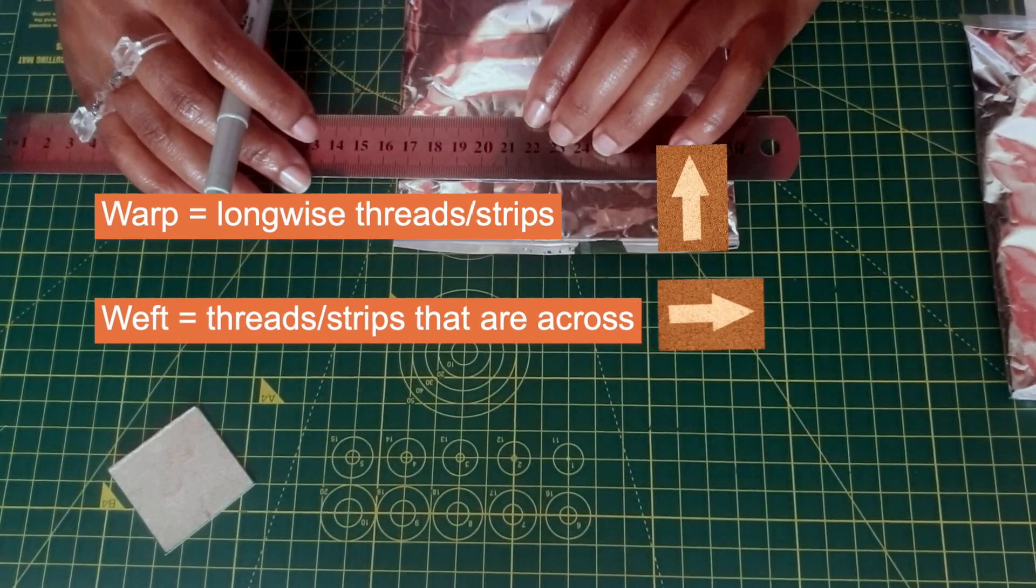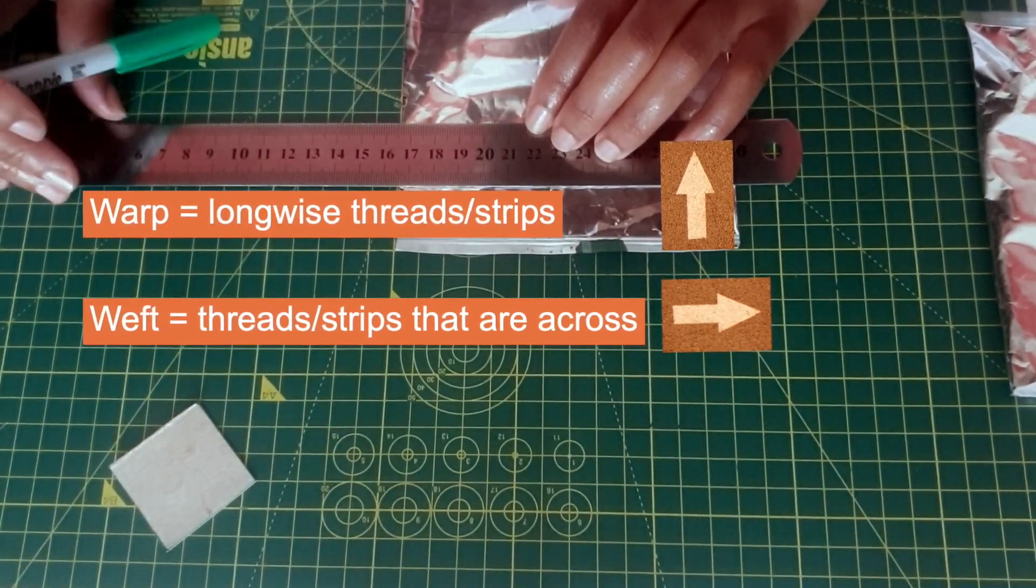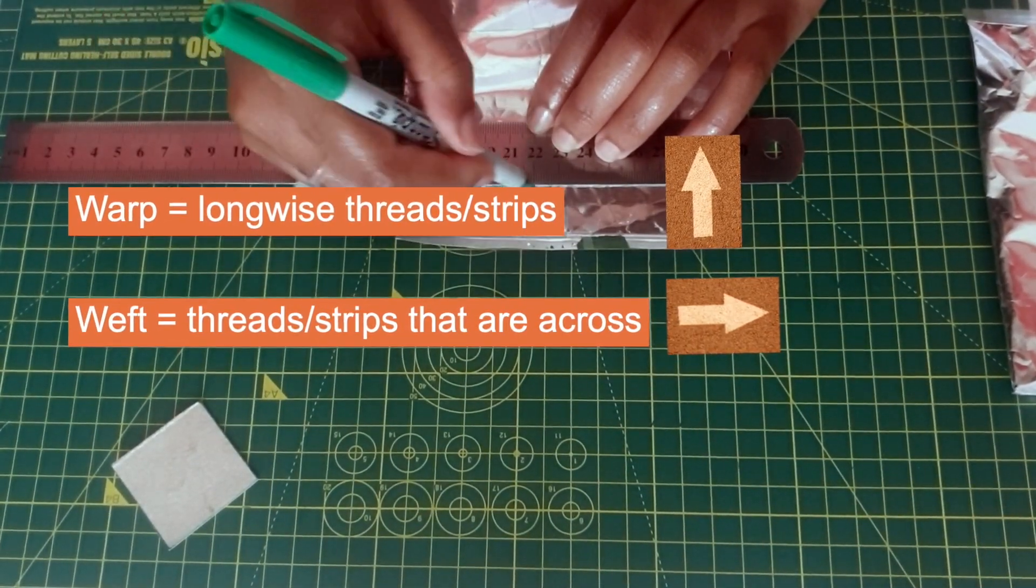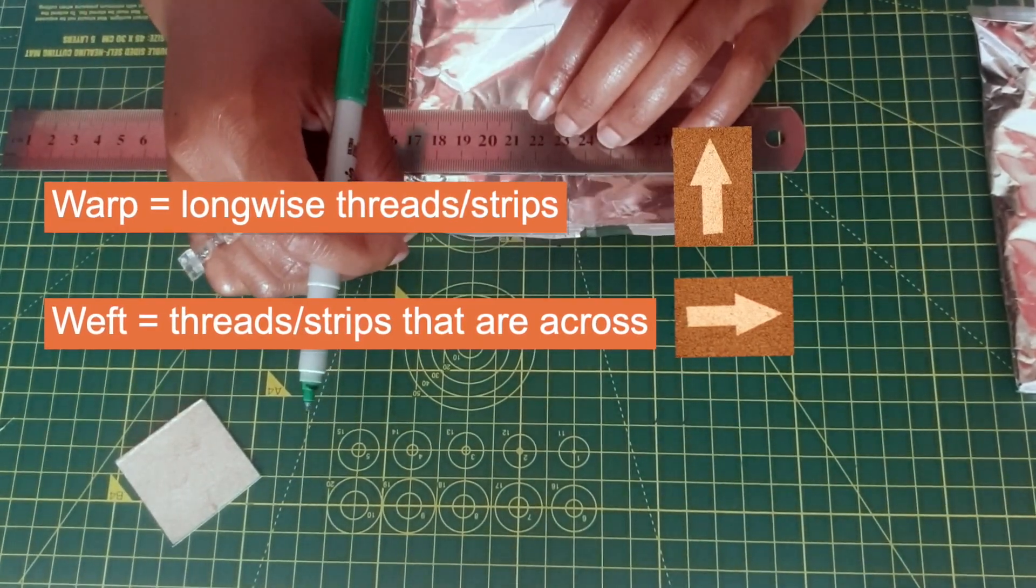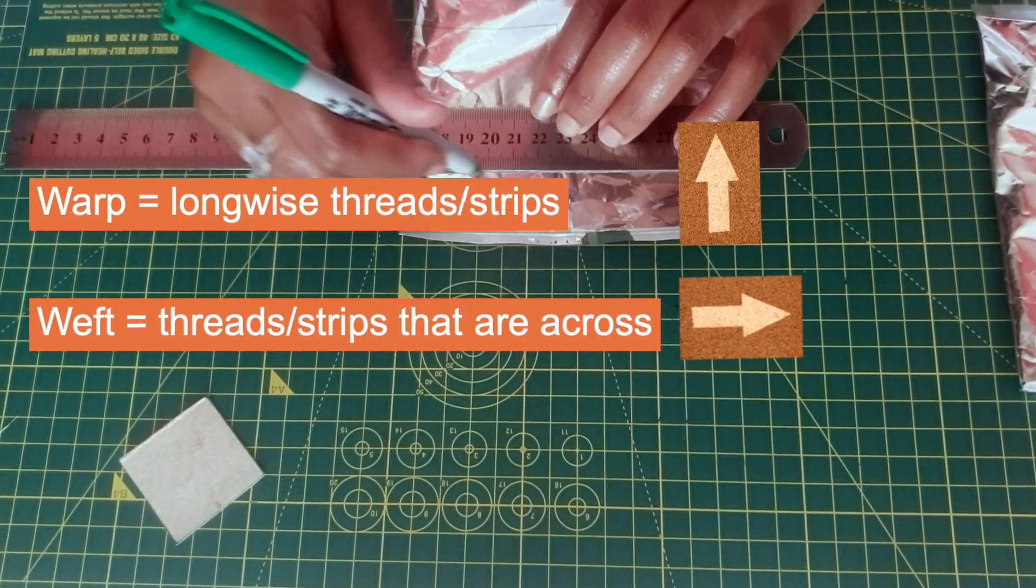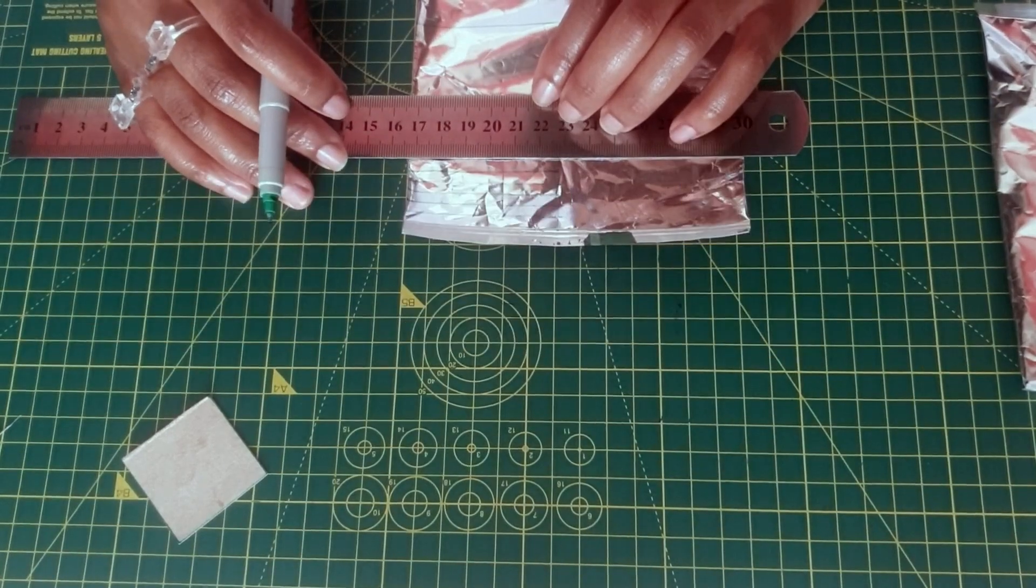These strips will create your warp and weft. If you don't know, warp is the long ways these strips and the weft will be the strips going across.